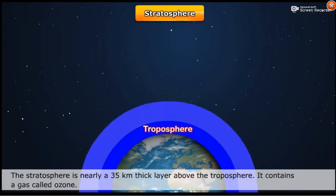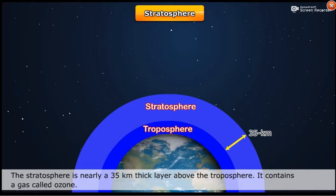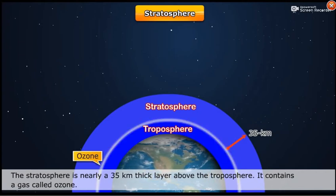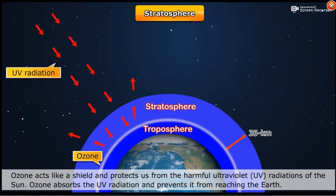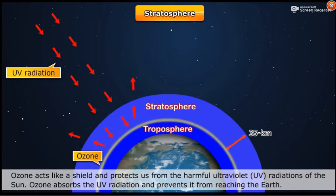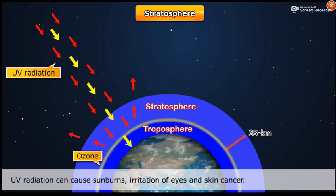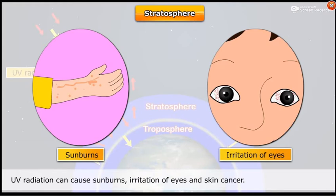The stratosphere is nearly a 35 km thick layer above the troposphere. It contains a gas called ozone. Ozone acts like a shield and protects us from the harmful ultraviolet (UV) radiations of the sun. Ozone absorbs the UV radiation and prevents it from reaching the earth. UV radiation can cause sunburns, irritation of eyes, and skin cancer.